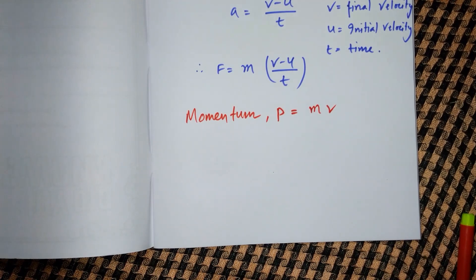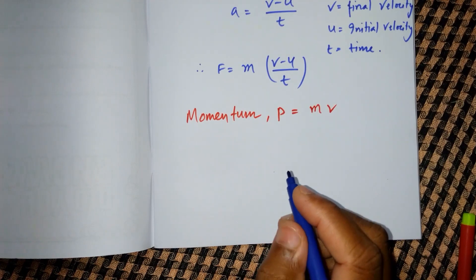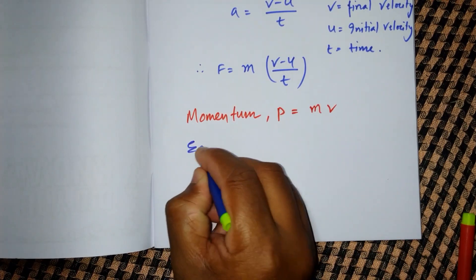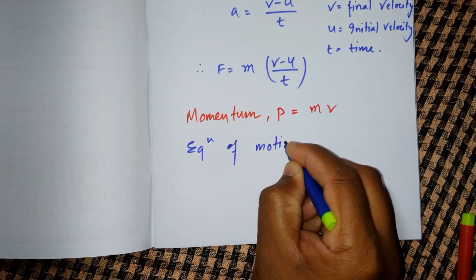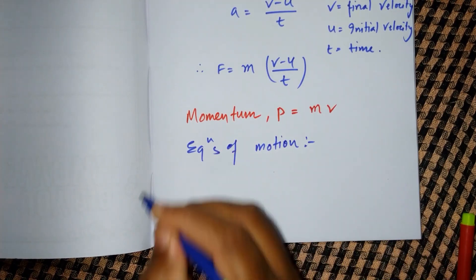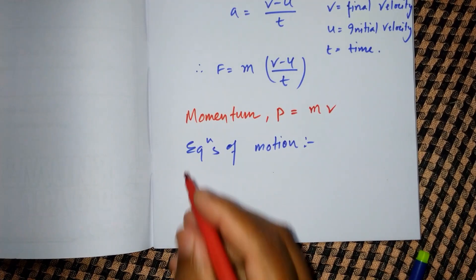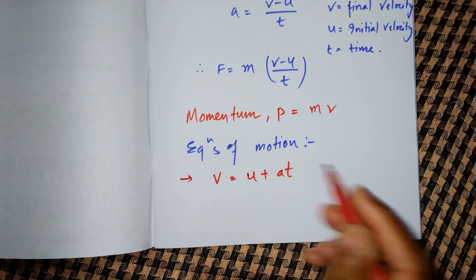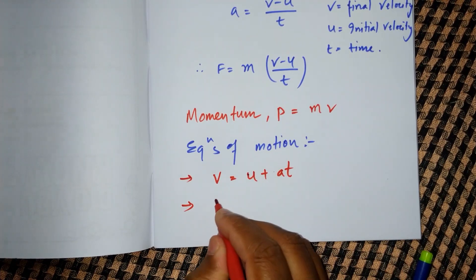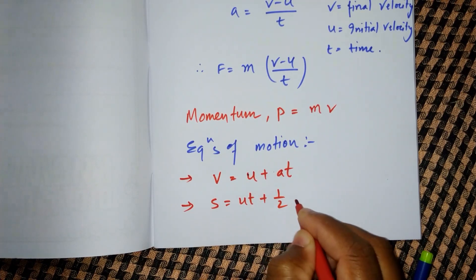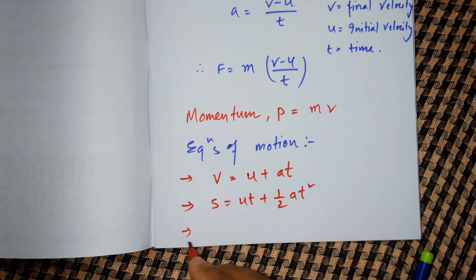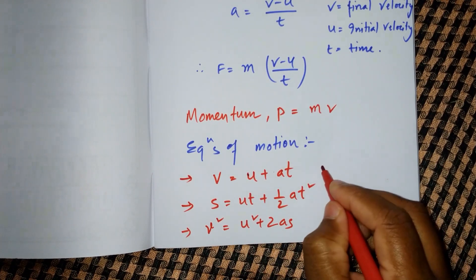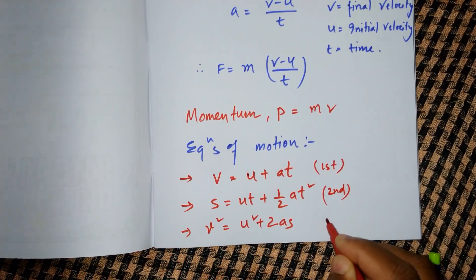Next, you have the equations of motion, which will also be required while solving the numericals of this chapter. The first equation of motion is: v equals u plus at. The second equation is: s equals ut plus half at squared. The third equation is: v squared equals u squared plus 2as.